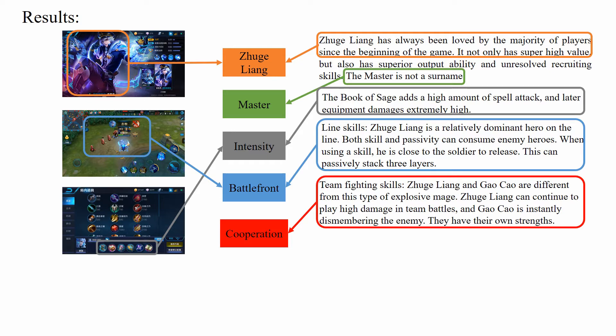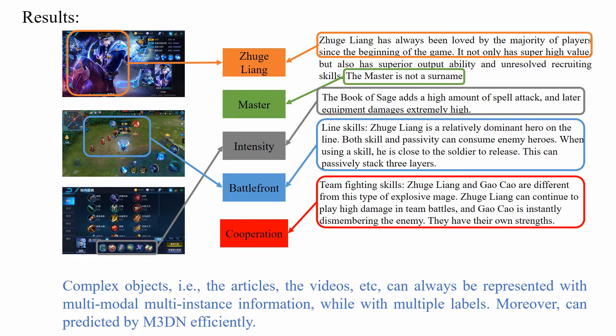In conclusion, complex objects — that is, articles, videos, and so on — can always be represented with multimodal multi-instance information, while with multiple labels. Moreover, they can be predicted by M3DN efficiently. Thanks for watching.